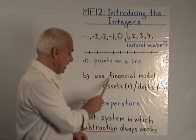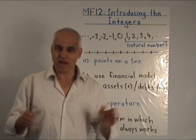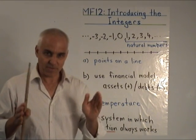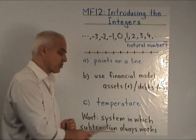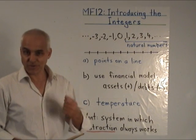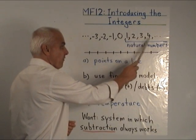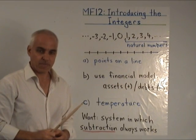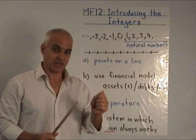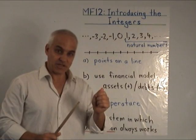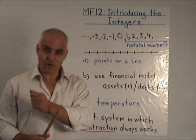We're not going to use either of these models because we want to start with only the natural numbers and do everything with respect to those. But what we are going to need is a system in which subtraction always works. That's the main reason for introducing the integers — so that not only can we subtract two from four, but we can also subtract four from two. We're going to take our clue from what we did with fractions: the way we introduced fractions to allow us to divide is going to be a clue to how we introduce integers to allow us to always subtract.